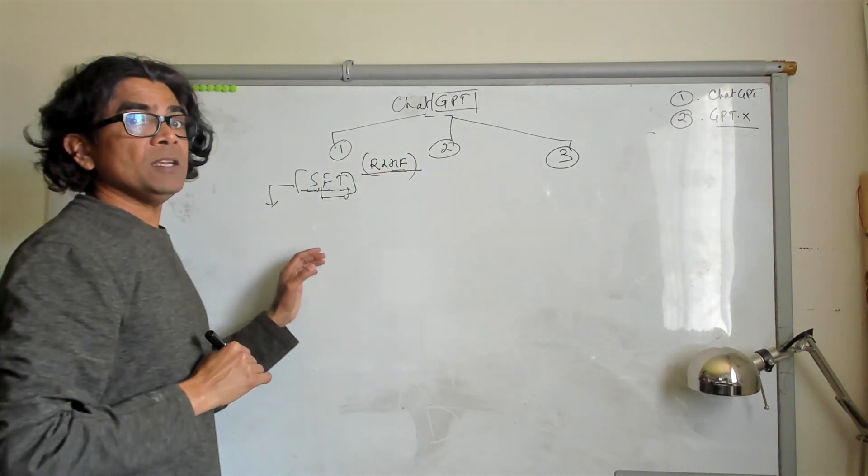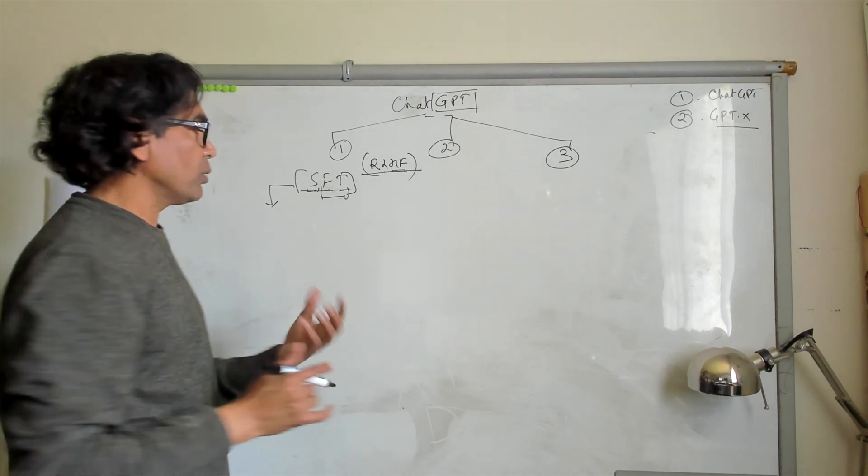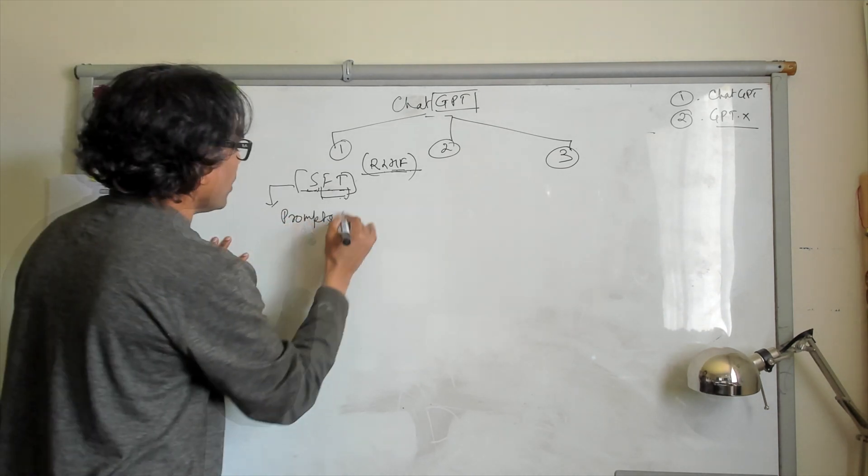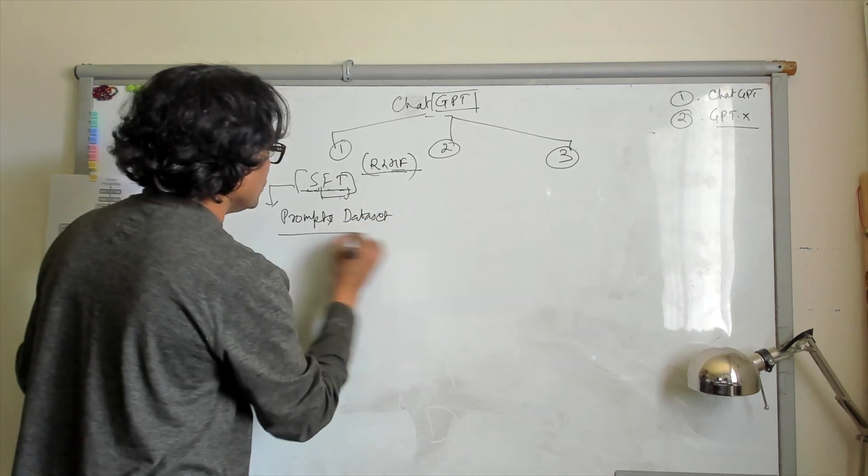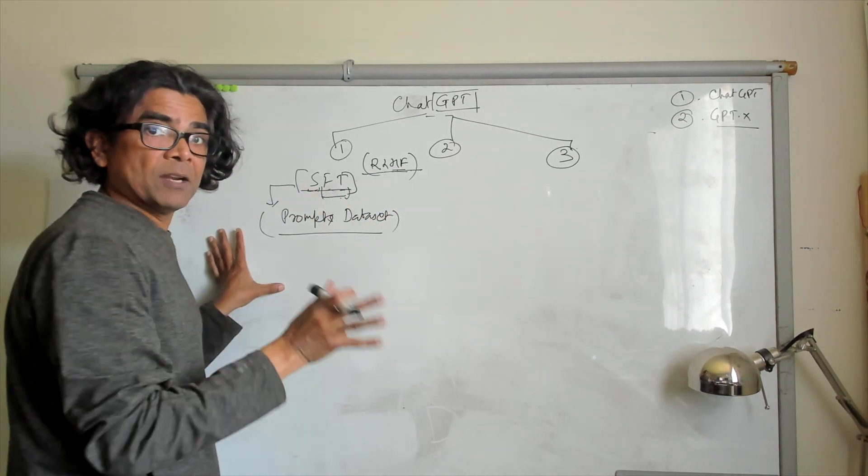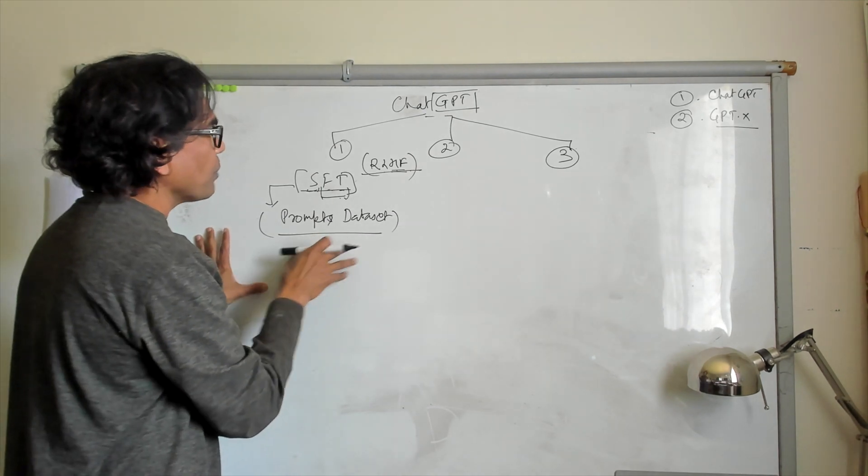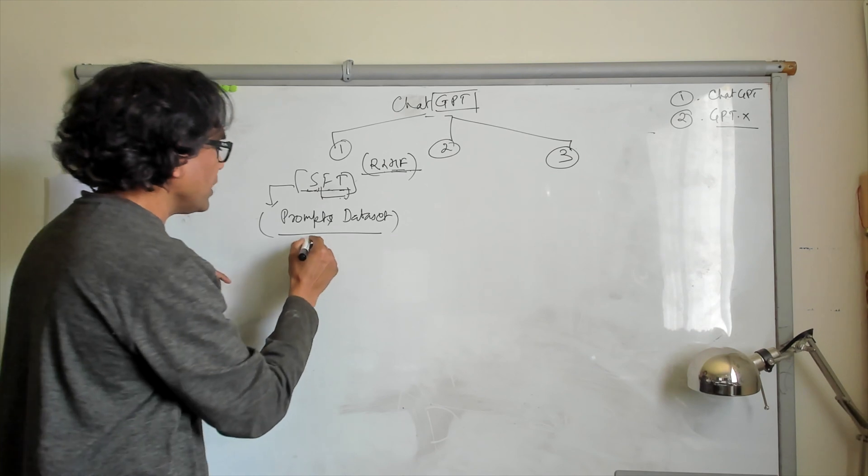Fine-tuning means training a model using a newer dataset which is already being trained. So taking a pre-trained model and training it with a new dataset. Supervised means the information we are providing has question and answer. Whatever we want to achieve from the model, that information is also available in this training dataset. So supervised fine-tuning is used for ChatGPT.